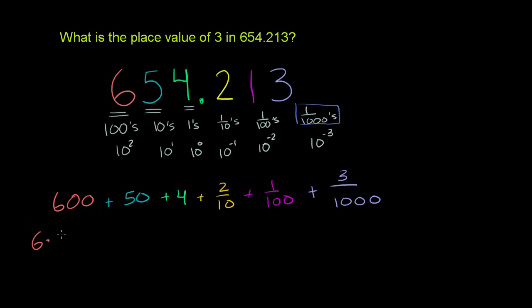6 times 100 plus 5 times 10 plus 4 times 1, plus 4 times 1 plus 2 times 1 tenth plus 1 times 1 over 100. And then finally, plus 3 times 1 over 1,000.